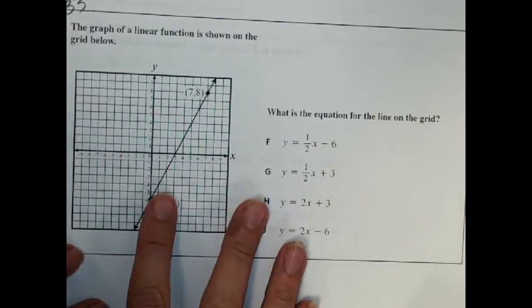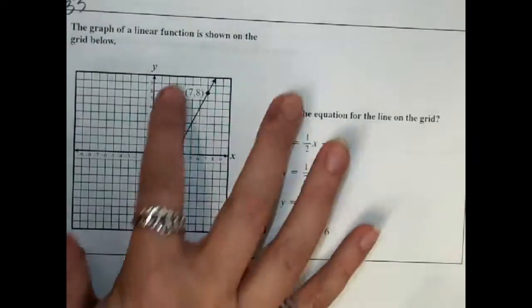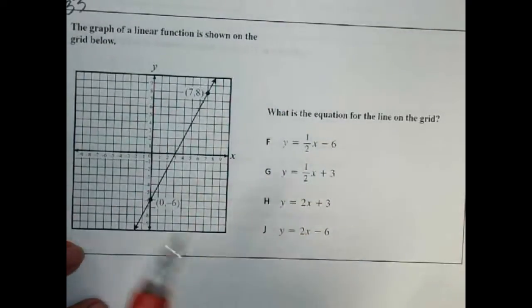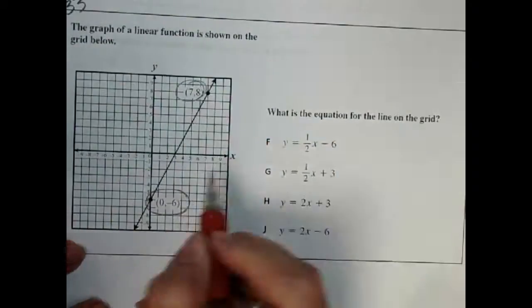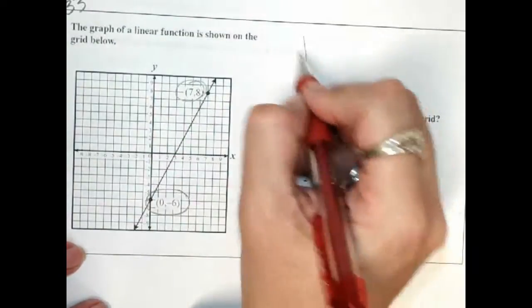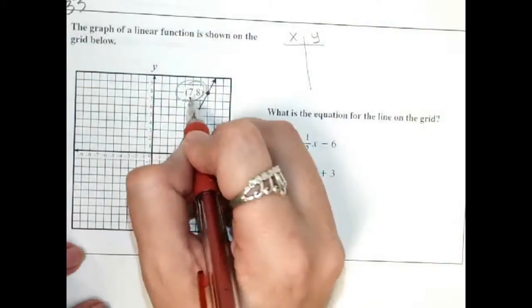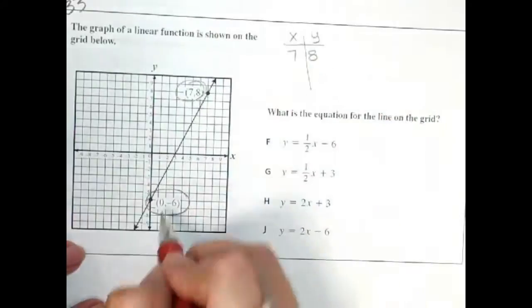Okay, so we're going to do this with a table. Even though it's not a table on here, it does give me two points that are on this. I'm going to plug these in for x and y, and what I'm going to put onto my table is 7, 8, and 0, negative 6.